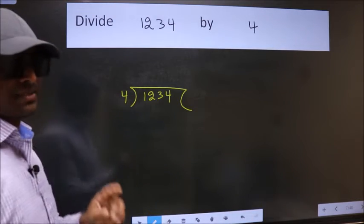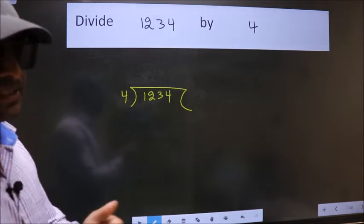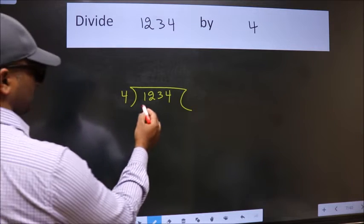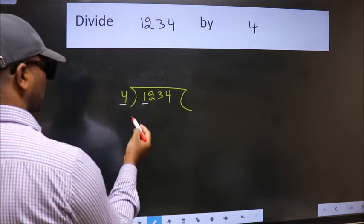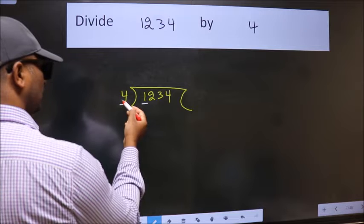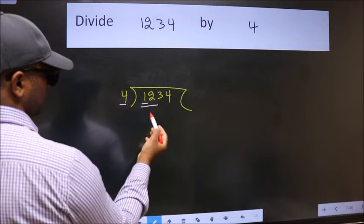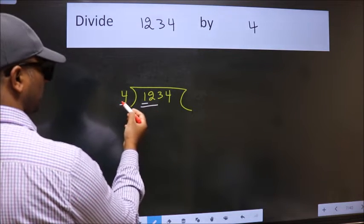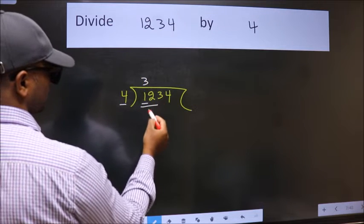This is your step 1. Next, here we have 1, here 4. 1 is smaller than 4, so we should take 2 numbers: 12. When do we get 12 in the 4 table? 4 times 3 is 12.